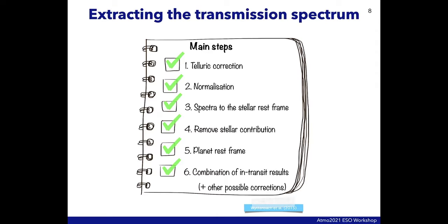The main steps to extract the transmission spectrum are: first, correct the telluric contamination from Earth's atmosphere; second, normalize the data; third, align all observations to the stellar rest frame; fourth, remove the stellar contribution; fifth, shift all planetary features to the planet rest frame; and finally, combine all planetary contributions to obtain the transmission spectrum.